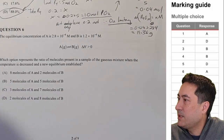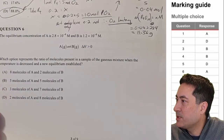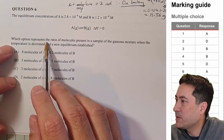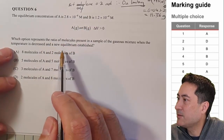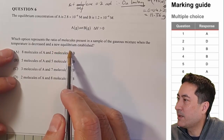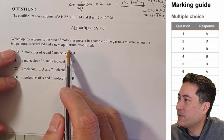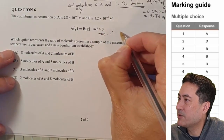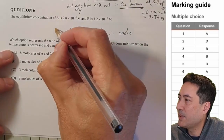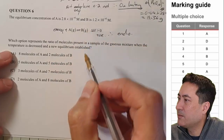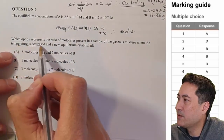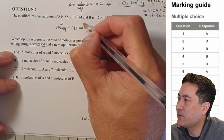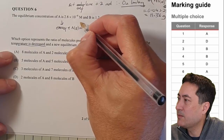Moving on to question six. The equilibrium concentration — this is quite an unusual one. It asks which graph represents the ratio of molecules in the gas industry when the temperature is decreased. I need to interpret that further. If delta H is greater than zero it's positive, so that means it's endothermic. I can put energy on the other side. Decreasing the temperature is going to cause a push to the left-hand side, so B goes down and A increases.